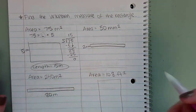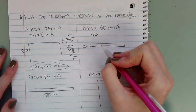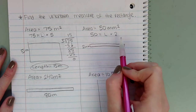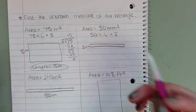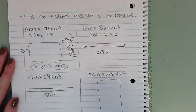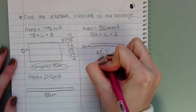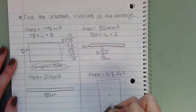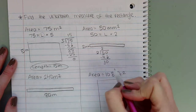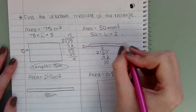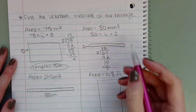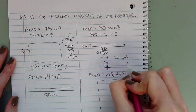Let's do this one now. We're told that the area is 50 millimeters squared, and we're given just one side, the width. So 50 equals length times 2. You can count by 2s until you get to 50, or we can set up a division equation: 50 divided by 2. 2 can go into 5 two times and equals 4. 5 minus 4 is 1. Bring down your 0, so we're left with 10. 2 goes into 10 five times, and 5 times 2 equals 10. So we know that the length is 25 millimeters.